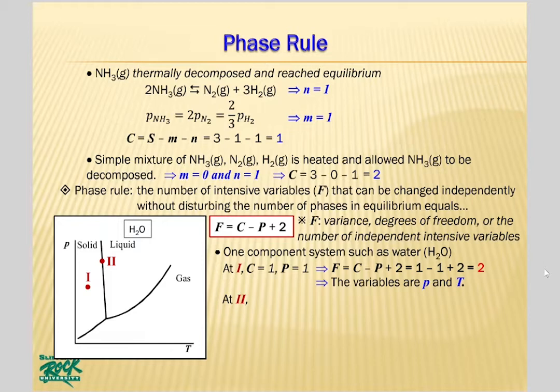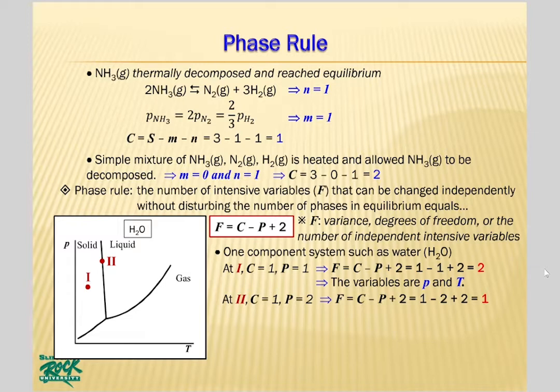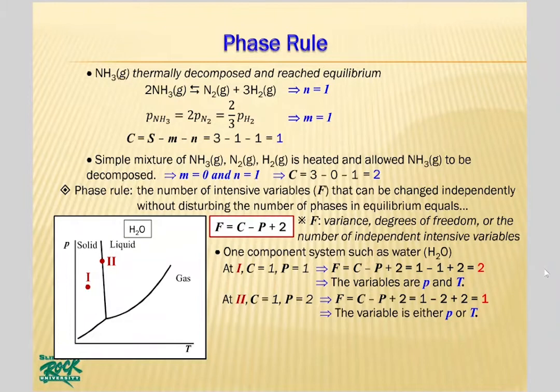Region 2 in the phase diagram is on the solid-liquid phase boundary line, where both solid and liquid coexist. So the number of phases P equals 2, and the number of components C is still 1. Consequently, F equals 1 at region 2, meaning only one intensive variable — either pressure or temperature — can be changed independently. If you change pressure along the phase boundary, the temperature at that pressure is fixed automatically.